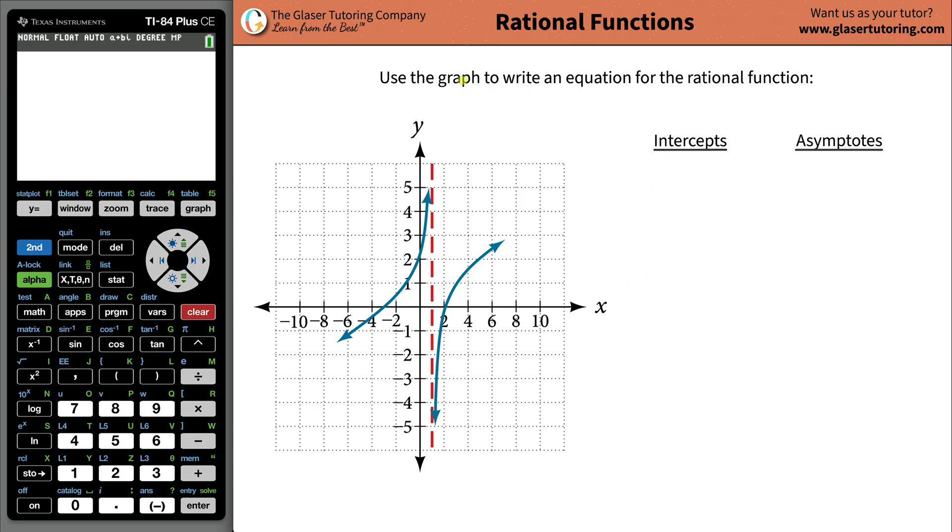Hi, I'm Andrew. Today I would like to teach you how to use the graph to write an equation for the rational function. So the first thing we're going to do is focus on the intercepts. There's really two things we have to focus on: intercepts and asymptotes.